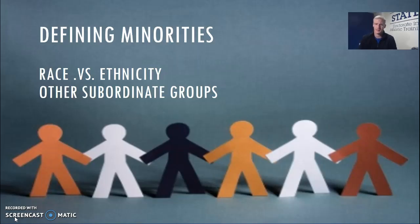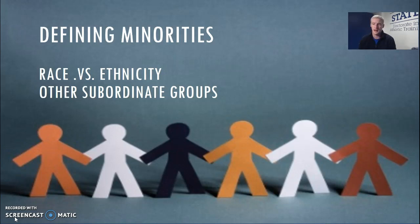When we begin to define minorities, the race versus ethnicity distinction comes up. Race deals with obvious physical characteristics such as skin color. In the United States, minority groups include Black or African Americans, American Indian and Alaskan, Hawaiian, Pacific Islander, and Eastern Asian.